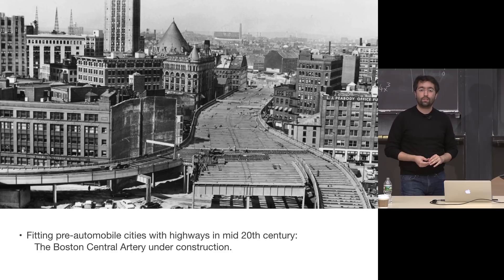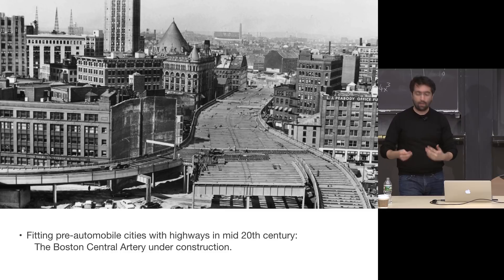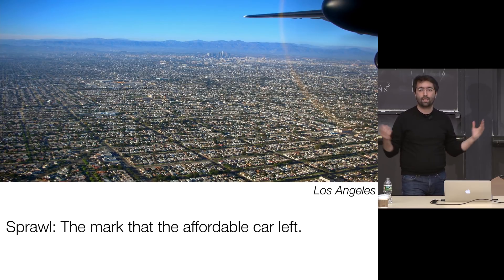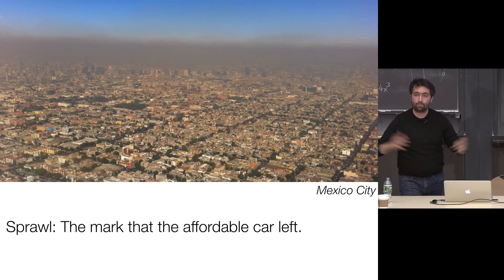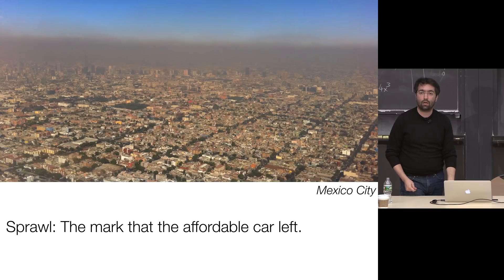It also changed the cities quite a bit. Boston's central artery was built in the 1950s to service cars coming in and out of the city. Cars generated this kind of infrastructure. In some places at the extreme — like Los Angeles — you see suburban sprawl. In places that didn't have the space or resources to expand, it caused many problems. For example, there was a traffic jam in China that lasted nine days and was 100 miles long.